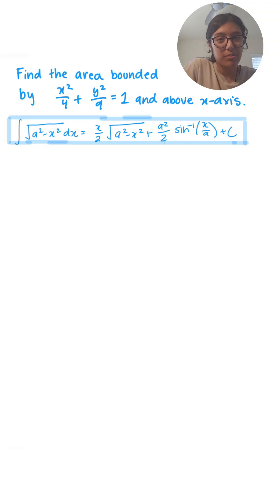Hey everybody, Sakani here. Today we're going to be taking a look at how to find the area bounded by x squared over 4 plus y squared over 9 equals 1 and above the x-axis.